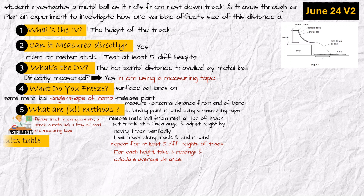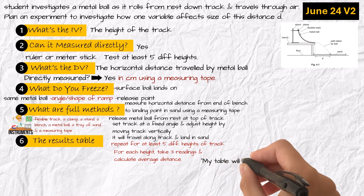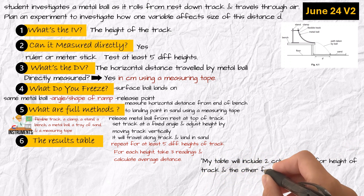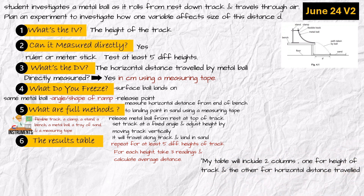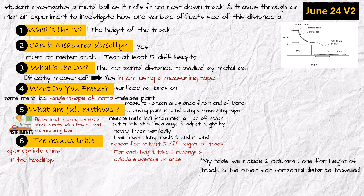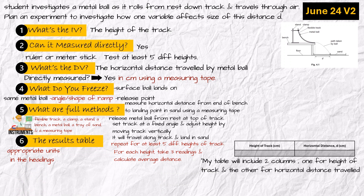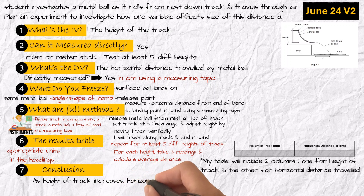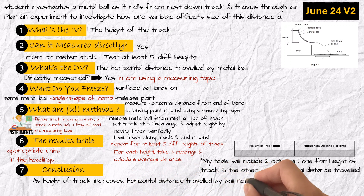Number six: the results table. My table will include two columns — one for the height of the track and the other for the horizontal distance traveled — with appropriate units in the headings. This is the structure your table needs to follow. Number seven: conclusion — as the height of the track increases, the horizontal distance traveled by the ball increases. Now match it with the mark scheme. Every mark is yours.